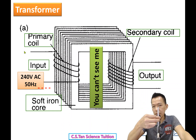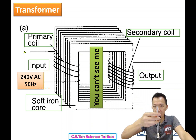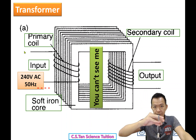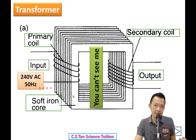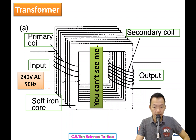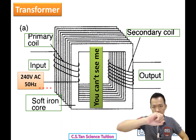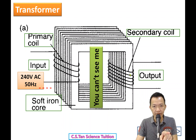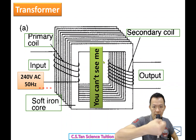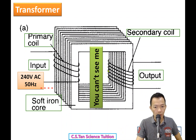Because it is AC, the magnetic field keeps changing poles — north, south, north, south — 50 times per second. This changing magnetic field surrounds the secondary coil. When a changing magnet moves around a wire, it induces an electric current — electromagnetic induction.